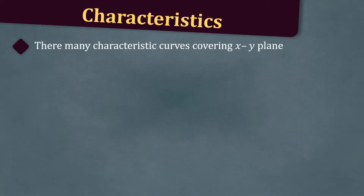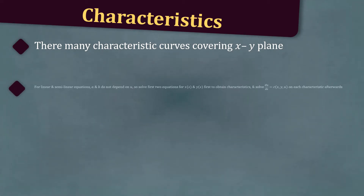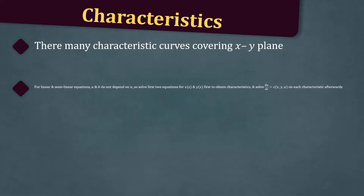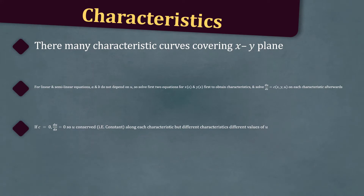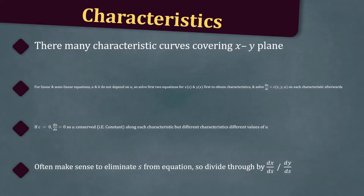Note there are many characteristic curves covering the x, y plane. For linear and semi-linear equations, a and b do not depend on u, so we can solve the first two equations for x(s) and y(s) first to obtain the characteristics, and then solve du/ds equals c(x, y, u) on each characteristic afterwards. Further, note that if c equals 0, then du/ds equals 0, so u is conserved, i.e. constant, along each characteristic, but different characteristics can have different values of u. It often makes sense to eliminate s from the equation, so we divide through by dx/ds or dy/ds.